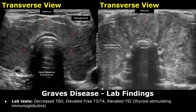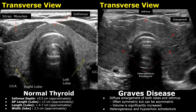We will compare the normal ultrasound appearance of the thyroid with its appearance in Graves' disease patients. This is the normal thyroid in transverse plane — it has a hyperechoic and homogeneous echo texture. These are the right and left lobes; the isthmus is in the middle. The normal thyroid measurements are given here. The right side shows a thyroid affected by Graves' disease.